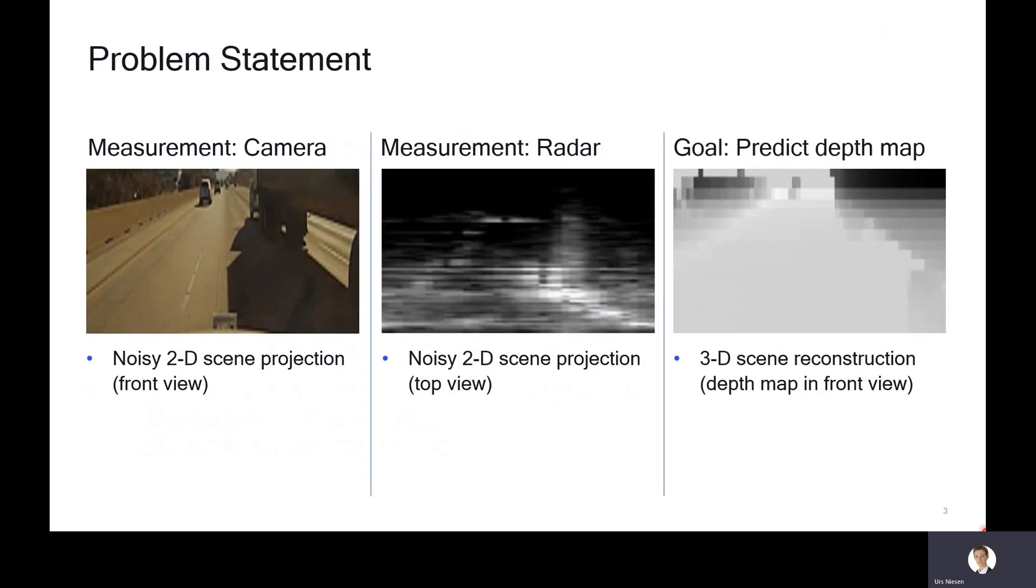Here is the problem statement in three figures. On the left, we have the first measurement from the camera. In the middle, the second measurement from the radar. And on the right, the goal is to predict the depth map, which associates to each region in the camera image a depth and therefore gives you a 3D scene reconstruction. The camera, which is mounted behind the front shield, gives you a 2D scene projection, a noisy 2D scene projection, in this case a front view.